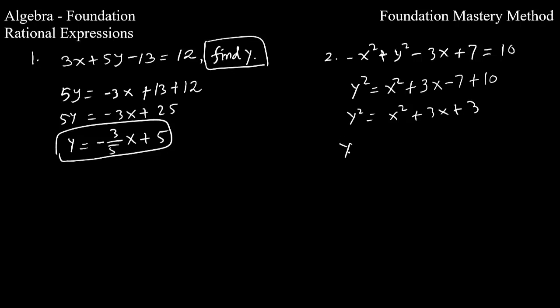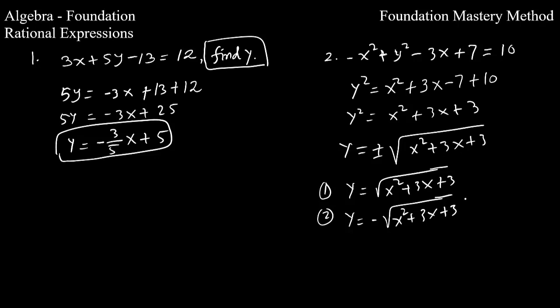Now, what is y? So y will be with the square root, but don't forget it, plus or minus sign. So you got x squared plus 3x plus 3. So you got basically two forms: y equals square root of x squared plus 3x plus 3, and the second one, you can say y equals minus square root of x squared plus 3x plus 3.